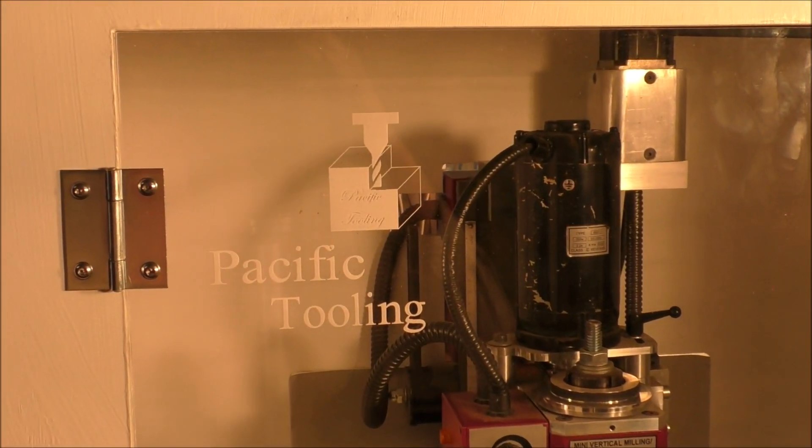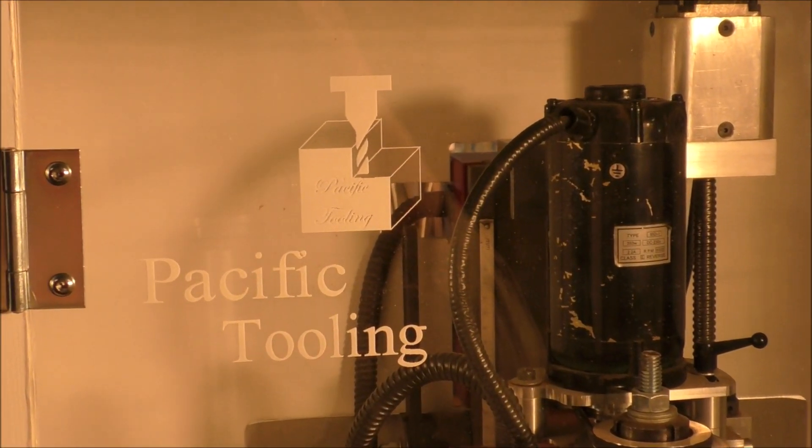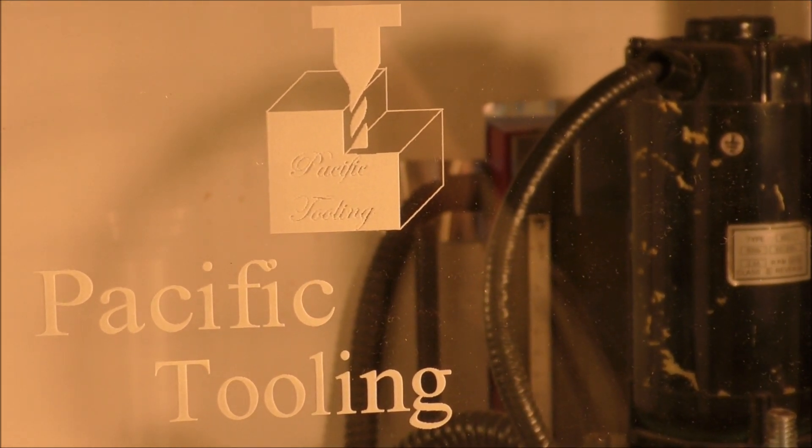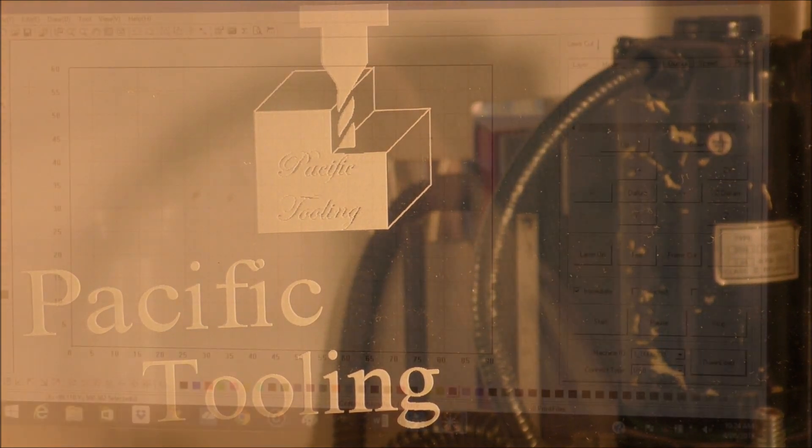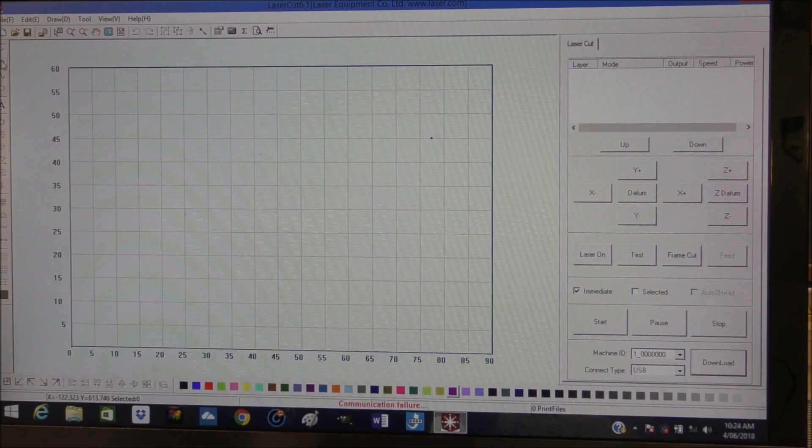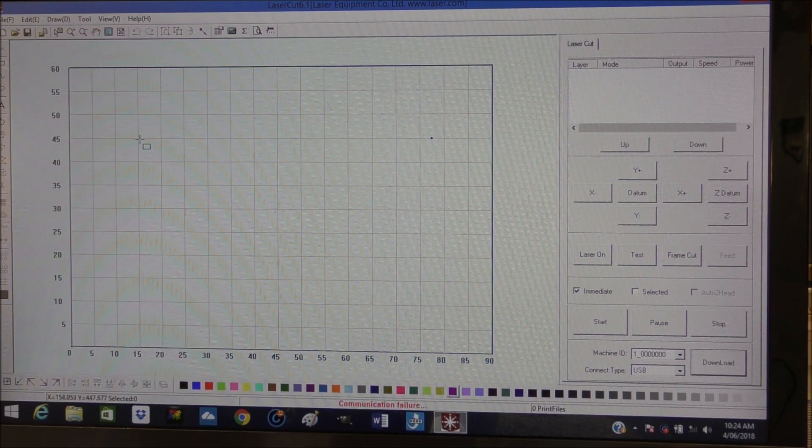Hello there, today we're going to laser engrave this logo into plexiglass. But first of all, we're going to set up LaserCut 6.1 and cut out a piece of plexiglass to the size of one of our side doors.